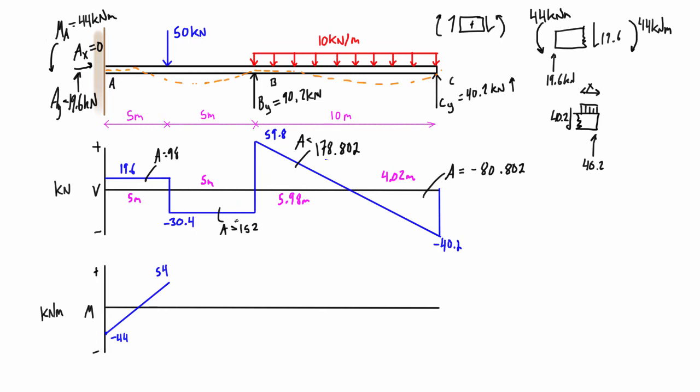Now as we traverse the next five meters, this is a negative area, so we've got to subtract. It is a constant here, so we have linear change in the bending moment diagram. So basically we have 54 minus 152, and that is going to bring us down to negative 98 kilonewton meters for the internal bending moment right at point B.